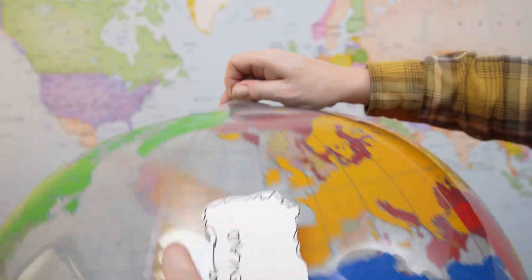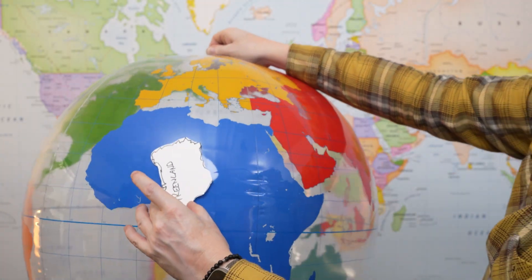On this map, Greenland and Africa look roughly the same size. Maybe Africa is a little bigger, but they're in the same ballpark, right? But here's the deal. Africa is actually 14 times larger than Greenland. 14 times!